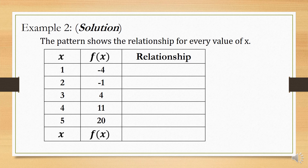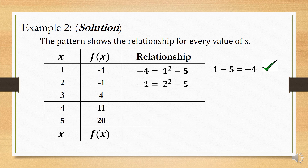Let's start with the first ordered pair: negative 4 is equal to 1 squared minus 5. Since 1 squared is 1, and 1 minus 5 is negative 4 — this is correct. For the next ordered pair, negative 1 is equal to 2 squared minus 5. Since 2 squared is 4, and 4 minus 5 is negative 1 — still correct.